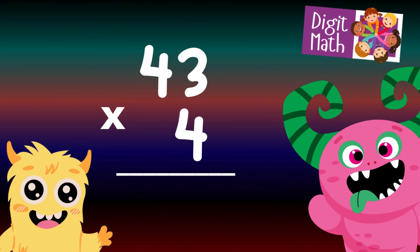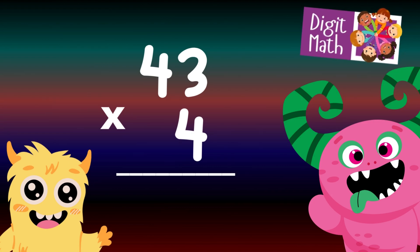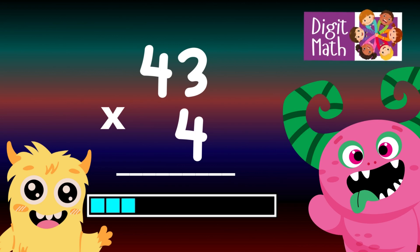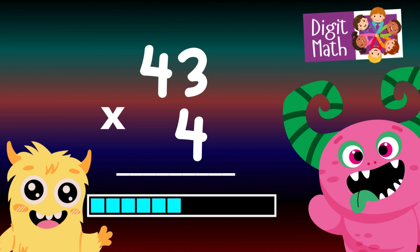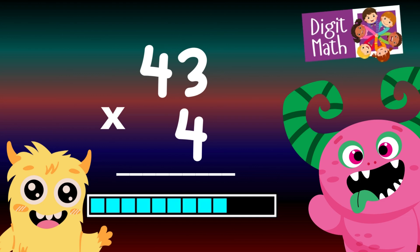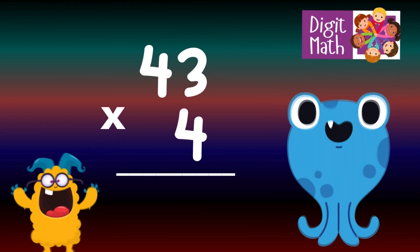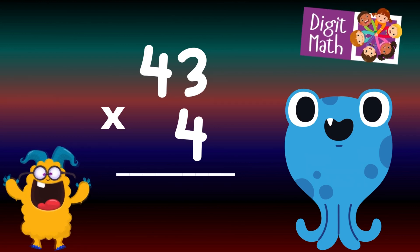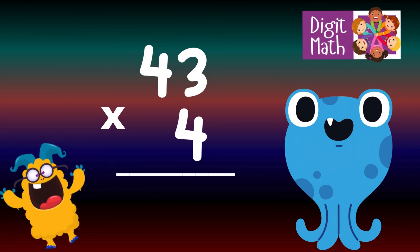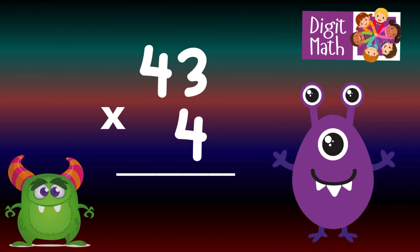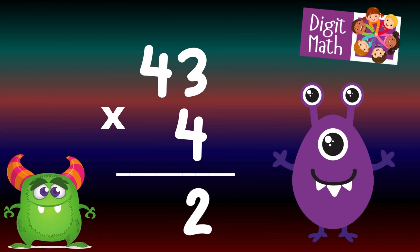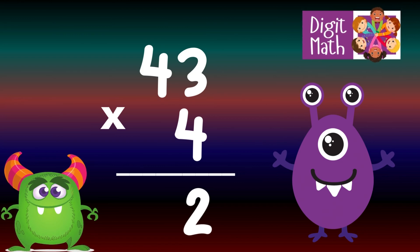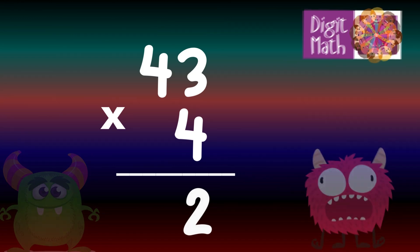43 times 4 — time to think. Let's go to the answer. To solve, multiply 43 by 4. In the Units column, multiply 4 by 3, which equals 12.